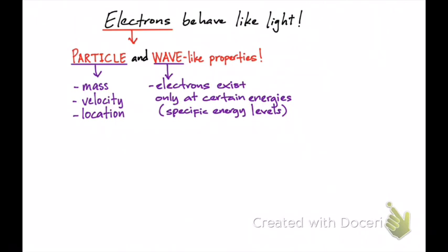Both frequency and wavelength are related, and you can use these two pieces of information to calculate energy. Electrons exist only at certain energies, and so electrons themselves contain energy. The main reason why they have energy is because they reside within the atom in what are called stationary states, or energy levels.